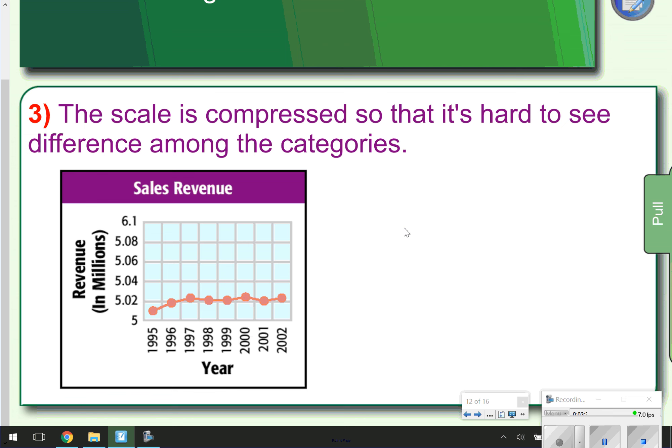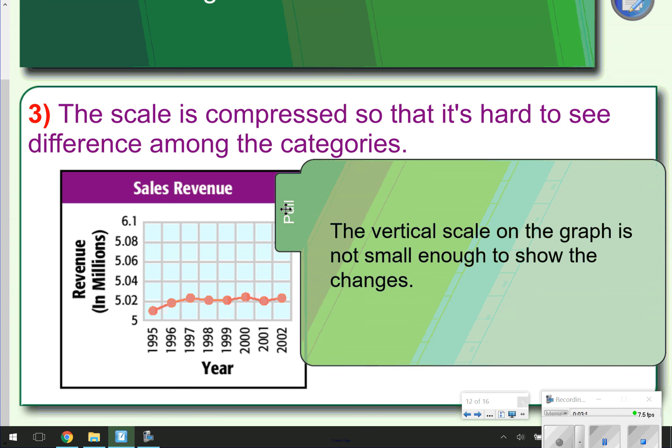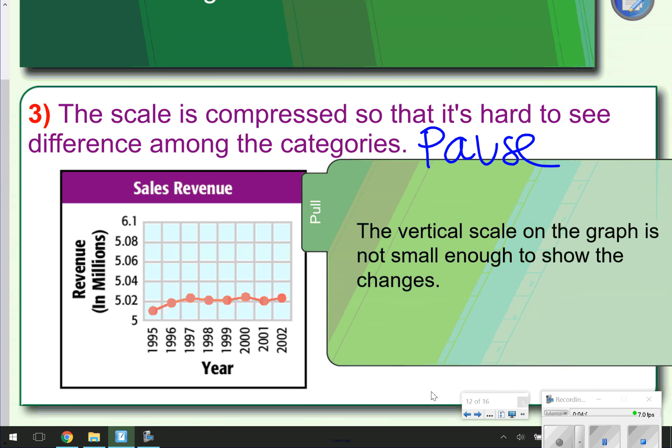The third way a graph can be misleading is when a scale is compressed or really tiny so that it's hard to see the difference among the categories. Notice all of the categories are right here between 5.01 and 5.02. So what they could have done is just expanded the graph a little bit. This also calls for, you can't really figure out what changes are, so that's just something else that you could add in your notes. Pause the video now to write down the third way a graph is misleading, and then sketch this graph right here. Once you're done, go ahead and click play and get ready for number 4.